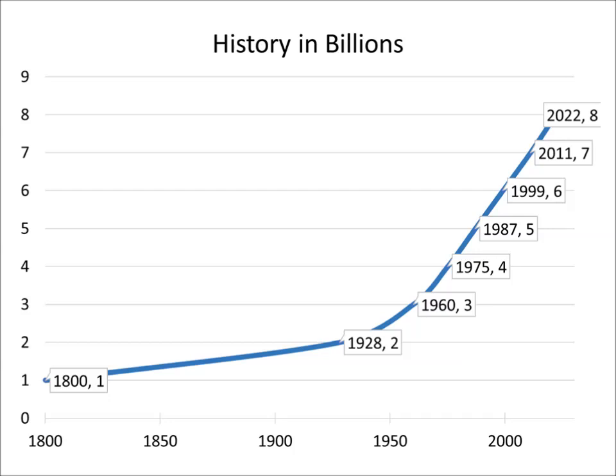It went from exponential growth in the early 20th century up until about 1970, and then it kind of flattened out into linear growth. So in 1987, which was 12 years after 1975, the world population reached 5 billion. In 1999 it reached 6 billion — another 12 years later. Then in 2011 it reached 7 billion, 12 years later. And then in about 11 years, in 2022, it reached 8 billion.